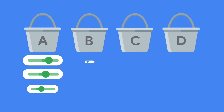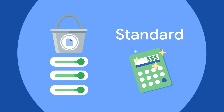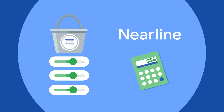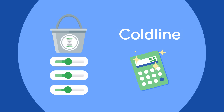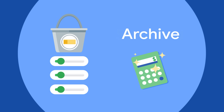When creating buckets, you have options depending on budget, availability, and access frequency. Choose standard, regional, or multi-regional buckets for high performance, frequent access, and highest availability. Nearline for once-a-month access, Coldline for less than once a quarter, and Archive for data that you want to put away for years.